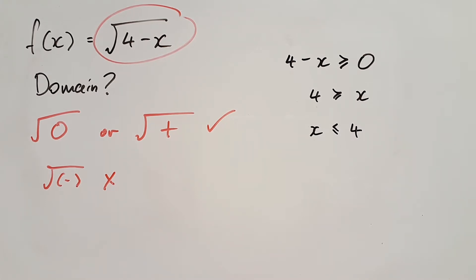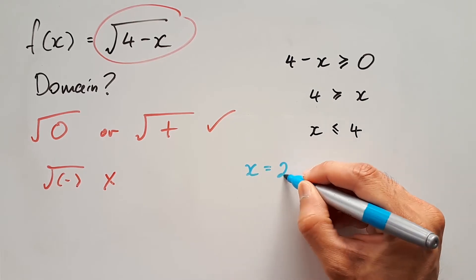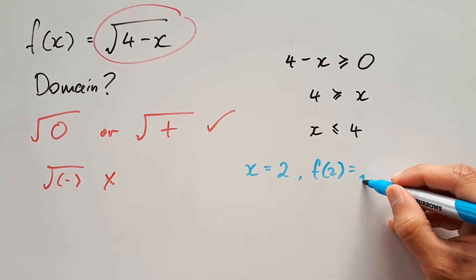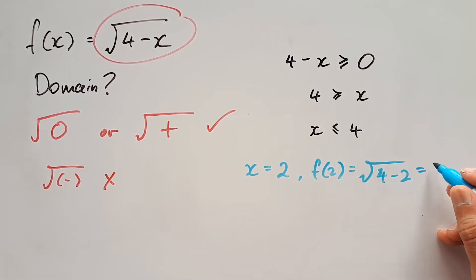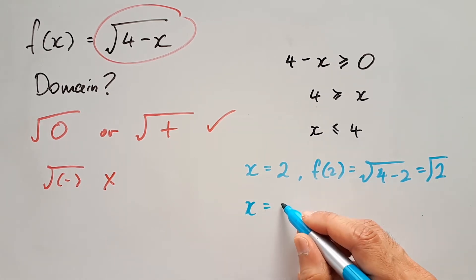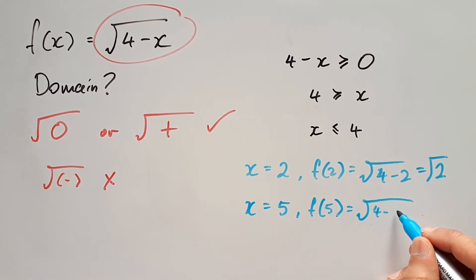Let's test out a few values to see why this is true. Say x equals 2, so f(2) equals square root of 4 minus 2, and that equals square root 2, which is a valid answer. If x equals 5, however, f(5) equals 4 minus 5, and that is square root of negative 1, which doesn't work.